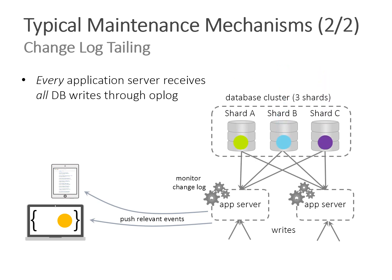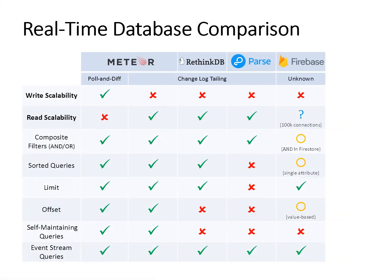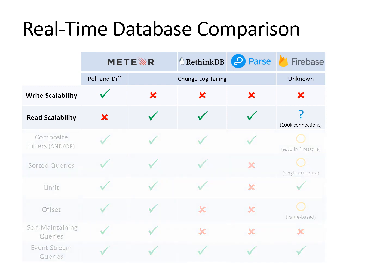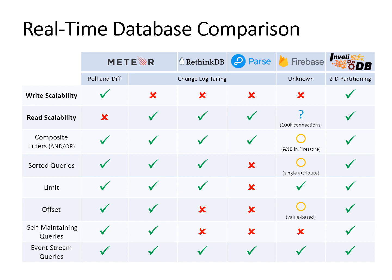However, if you need database sharding, writes are distributed at the database level, but every app server is subscribed to all database shards to receive all changes — this broadcast breaks your application because you cannot effectively shard it even with a sharded database. This effectively means no write scalability whatsoever. Most systems today use either poll-and-diff or change log tailing; Firebase and Firestore are exceptions using unknown proprietary approaches. No system provides simultaneous read and write scalability — that's why we developed InvalidDB.